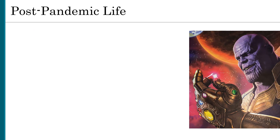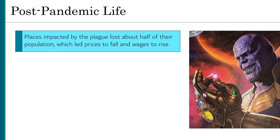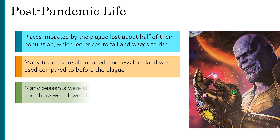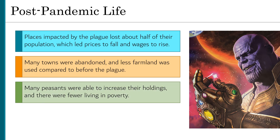As Malthus would predict, wiping out half of the population meant an increase in living standards for a short time. In this way, we can think of Thanos in the Marvel movies as a Malthusian in his thinking. Prices fell and wages rose, increasing people's real income. Many towns were abandoned, and less farmland was used compared to before the plague. Many peasants were able to increase their holdings, and there were fewer living in poverty.